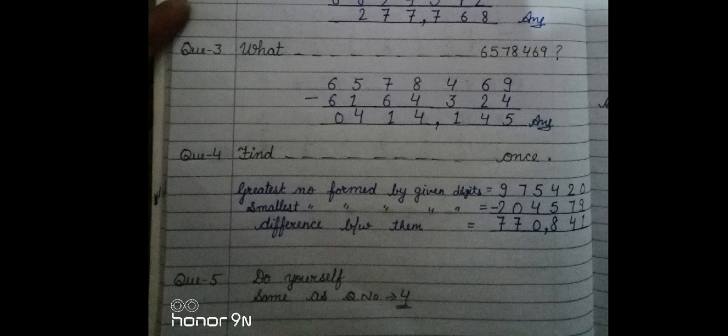Next question, question number four: find the difference between the greatest and smallest number that can be formed using the given digits. You have to form the greatest number and also form the smallest number using these given digits. The greatest number using this given digit is 9,75,420.